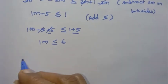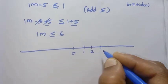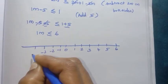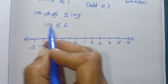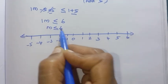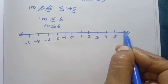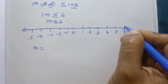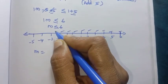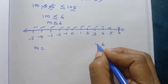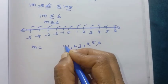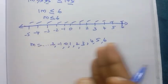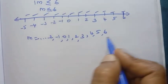Since m is an integer, the number line shows: 0, 1, 2, 3, 4, 5, 6 on the positive side and minus 1, minus 2, minus 3, minus 4, minus 5 on the negative side. m is less than or equal to 6, so the values include 6, 5, 4, 3, 2, 1, 0, minus 1, minus 2 and so on. Positive numbers are on this side and negative on the other. This is the answer.